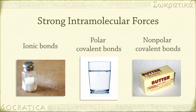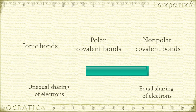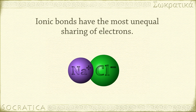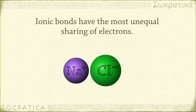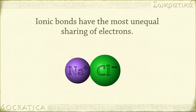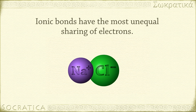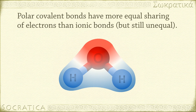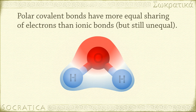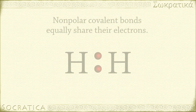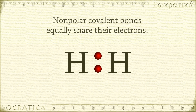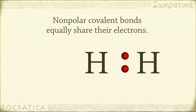You can think of these three types of bonds lying on a scale of unequal sharing of electrons. Ionic bonds have the most unequal sharing, with one ion having a full negative charge with one or more extra electrons, and the other ion being fully positive since it has lost an electron or two. Polar covalent bonds have more equal sharing of electrons, but one atom keeps the electrons more towards their side of the bond than the other. And nonpolar covalent bonds are between atoms that more or less equally share their electrons.